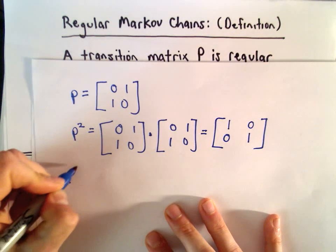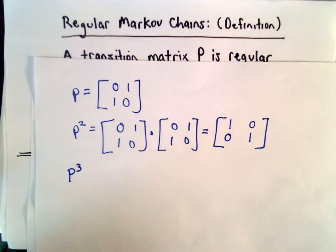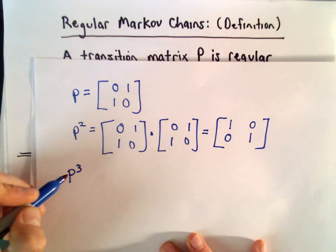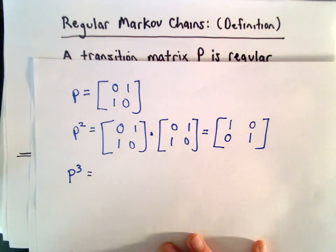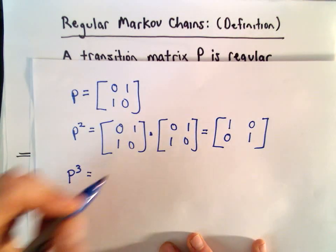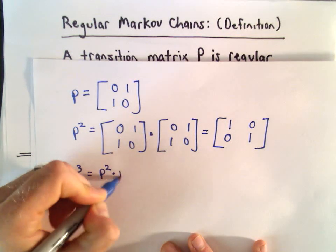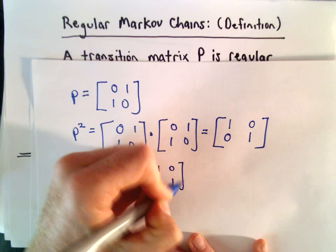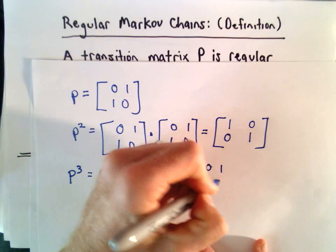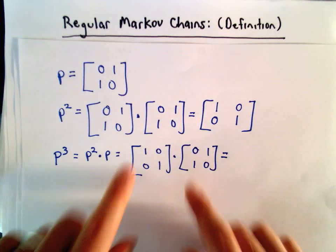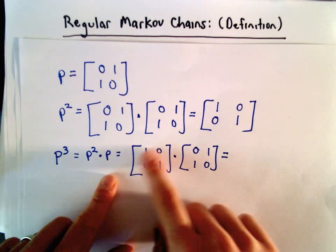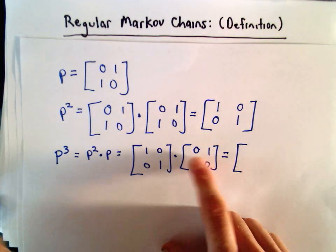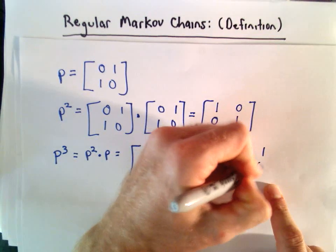Maybe if I multiply again by P, the transition matrix will turn out to be regular. So I'm going to take P squared and multiply it by P. We have the identity matrix [[1,0],[0,1]] multiplied by P, which is [[0,1],[1,0]]. Since we're multiplying by the identity matrix, you get the matrix [[0,1],[1,0]] right back.